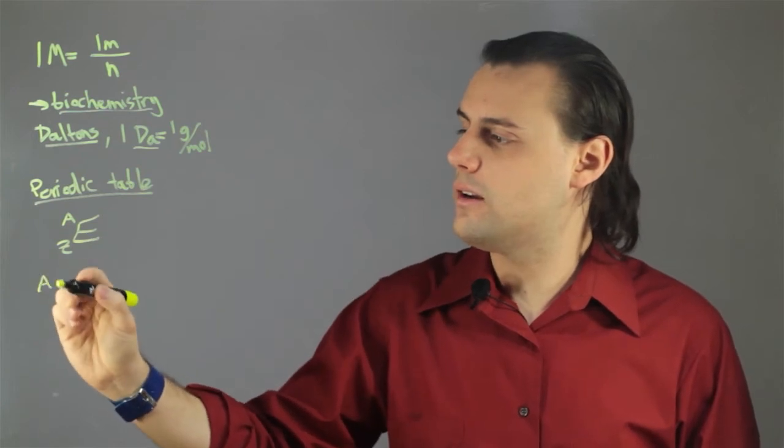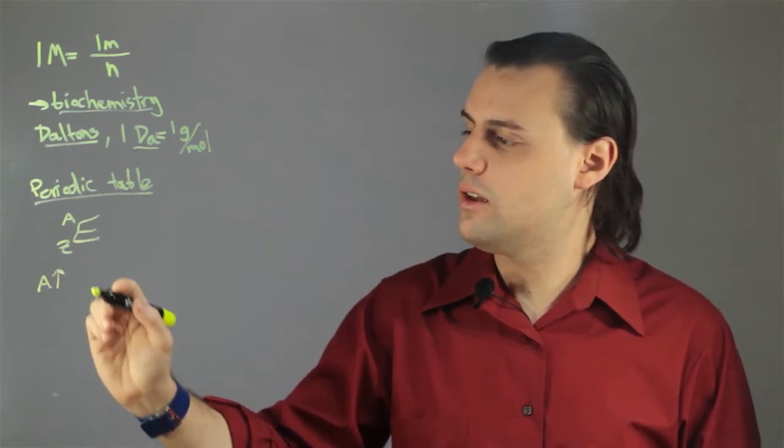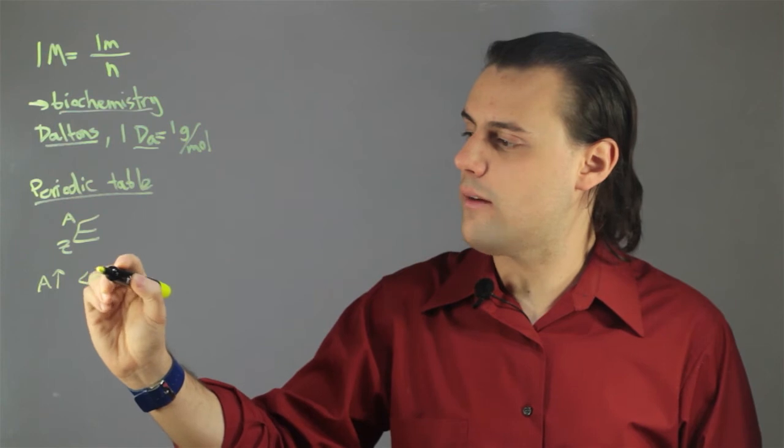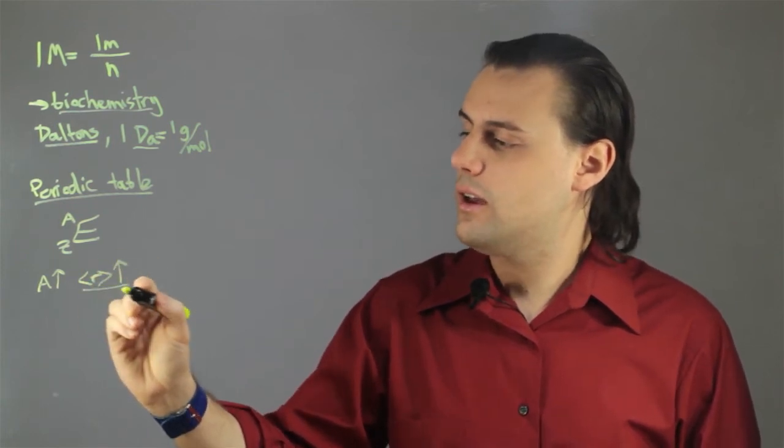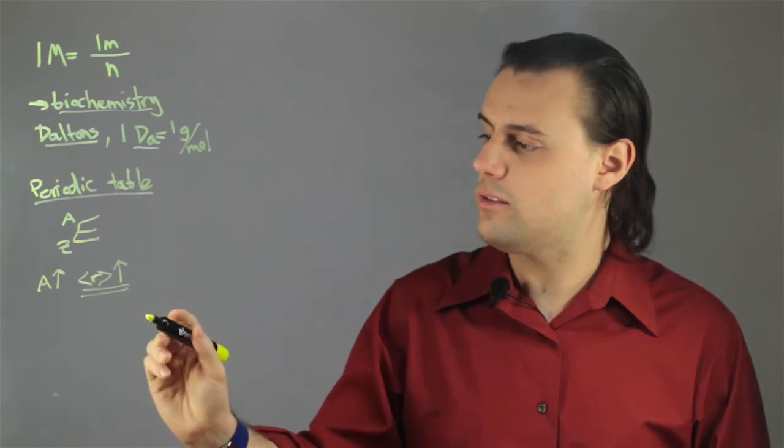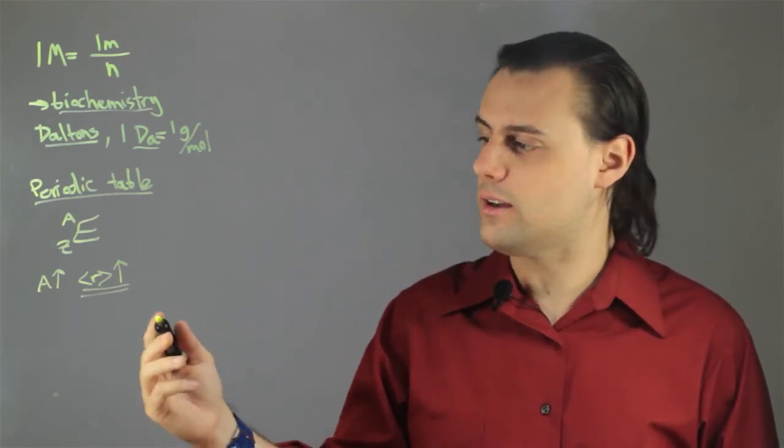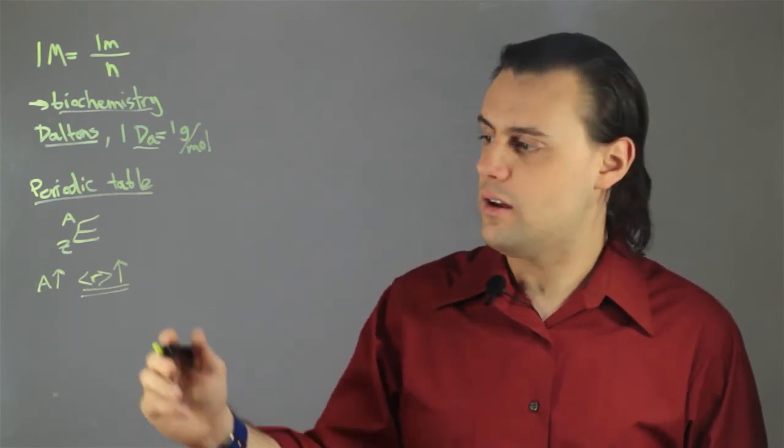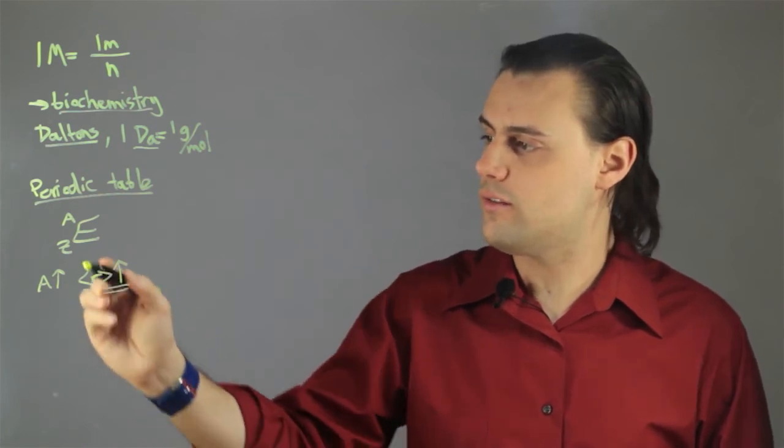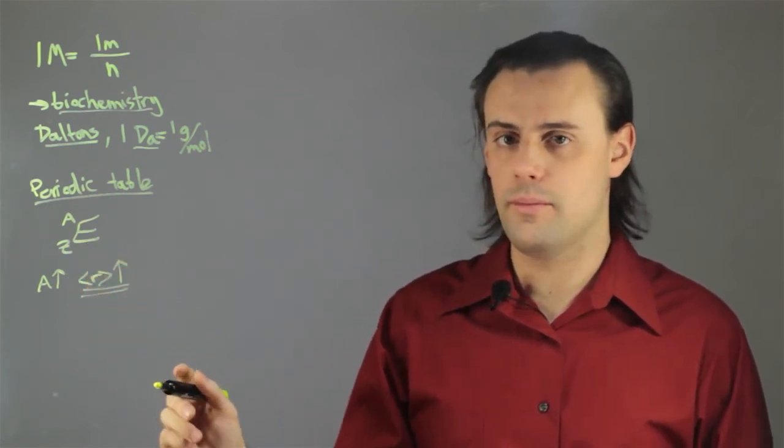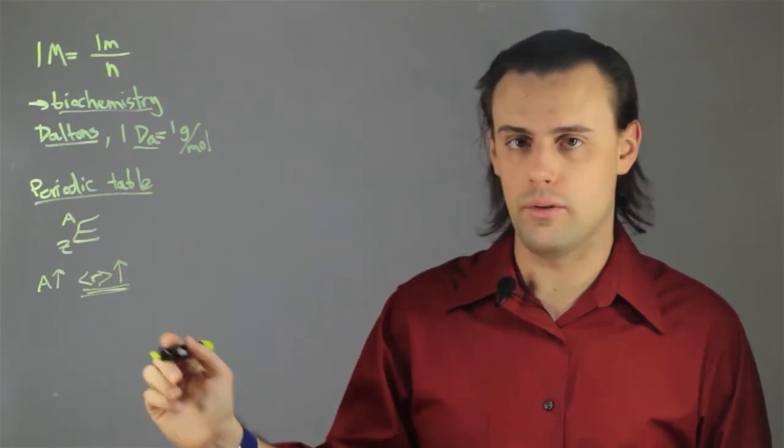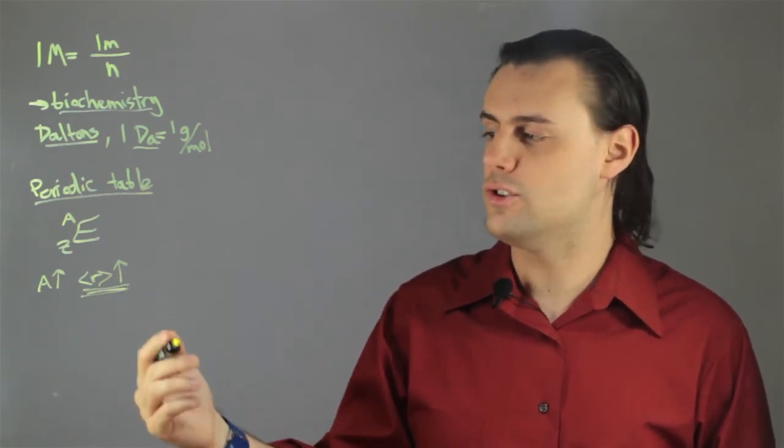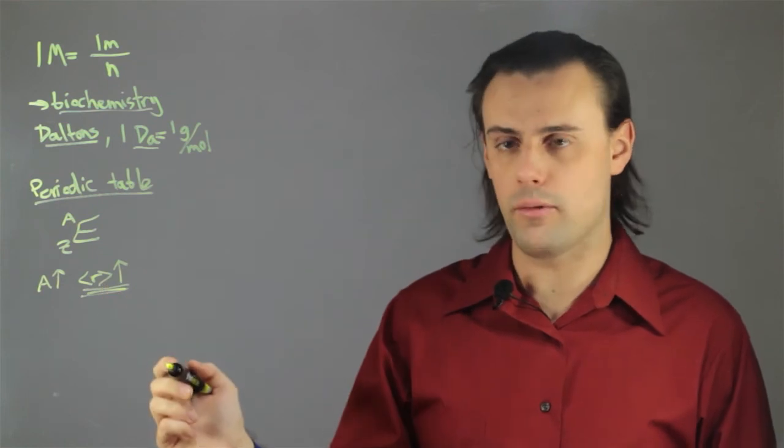as the atomic mass increases, so too will the average size or average radius of the element. This depends on several factors, including electron shielding, the nuclear charge, if Z increases, for example, and other features, such as the energy level of the atom. If it's excited, it will generally have a larger atomic radius.